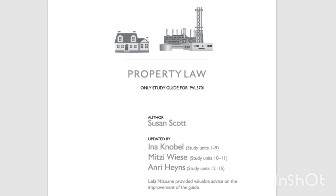Secondly, with certain kinds of things, the requirement of an independent existence gives rise to specific problems, because some things — for example, water, sand, or gases — are not naturally delimited into recognizable units, but are only collected into independent units by human intervention; for example, by collecting the water, sand, or gas in a container such as a bottle, a paper bag, or a cylinder respectively. Only with such human intervention can seawater or fresh air be said to be an independent thing.